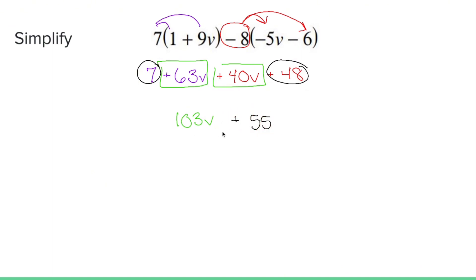Now if you're wondering, how do I combine these? You don't, because you can't. One has a variable, the other one doesn't. So we're done here, and our answer is 103v plus 55. Combining like terms, distributive property, great times.